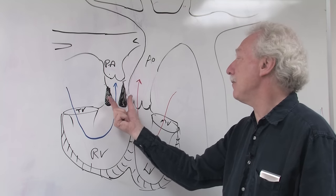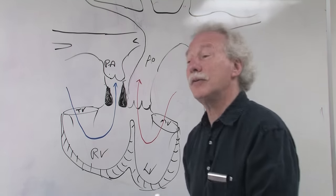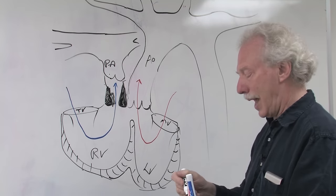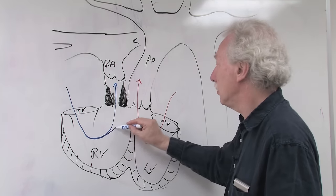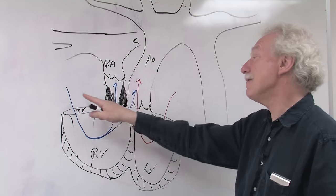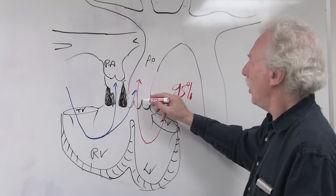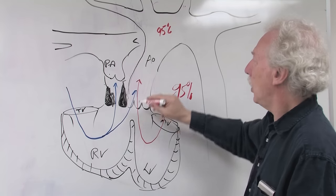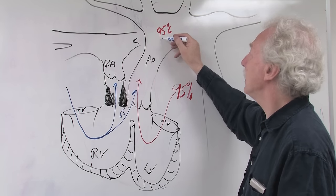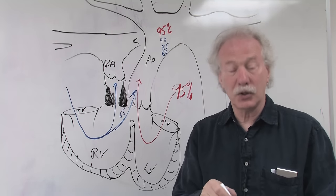You can imagine that if this degree of obstruction to the right ventricular outflow tract gets more severe with time, and there is greater resistance to blood flow going out to the pulmonary artery, then there will be admixture of systemic venous blood, or desaturated blood, going to the systemic circulation. The saturation coming from the lungs is 95%, but once we add some blue blood with a saturation of 65%, this saturation is going to get lower and lower.